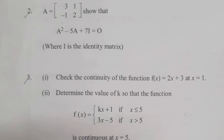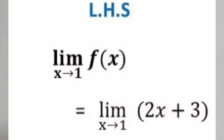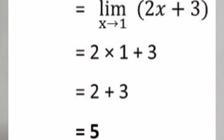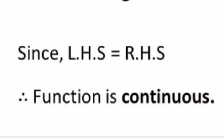Problem 3.1: Check the continuity of the function f(x) = 2x + 3 at x = 1. Answer: f(x) is continuous at x = 1 if limit as x tends to 1 of f(x) = f(1). LHL = limit x→1 of (2x+3) = 2(1)+3 = 5. RHS: f(1) = 2(1)+3 = 5. Since LHS = RHS, the function is continuous.